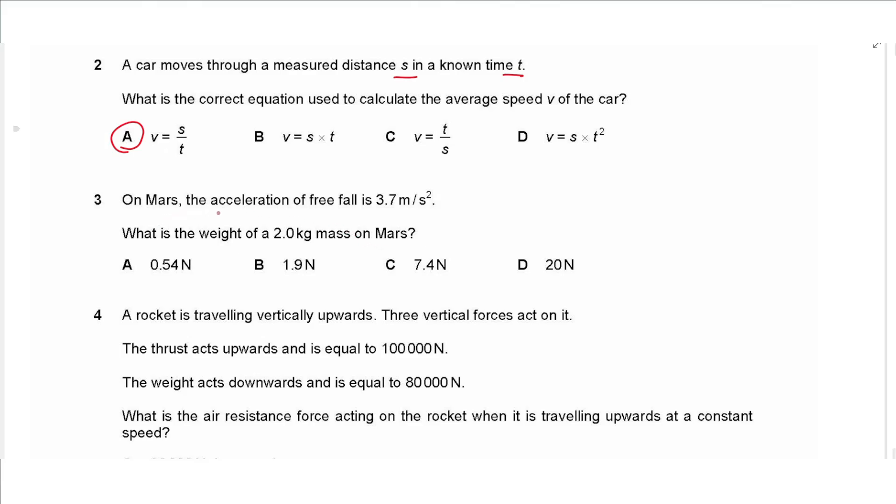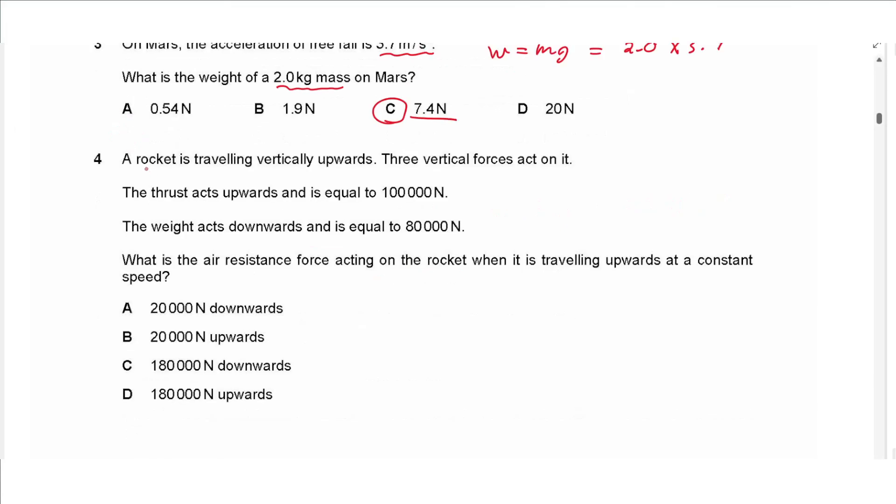Question three says on Mars the acceleration of free fall is 3.7 meters per second squared. What is the weight of a two kilogram mass on Mars? So weight is equal to mg, so we multiply 2.0 times 3.7 that gives an answer of 7.4 newtons, so we choose C.